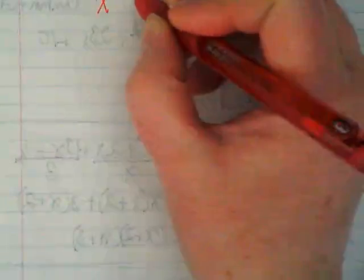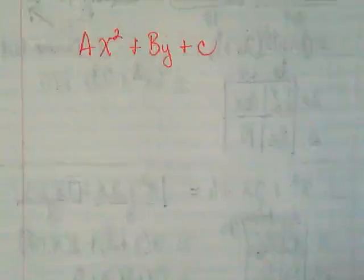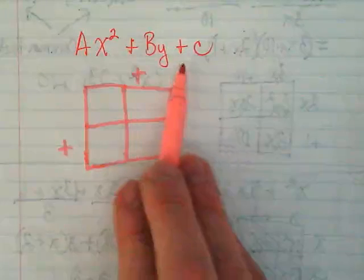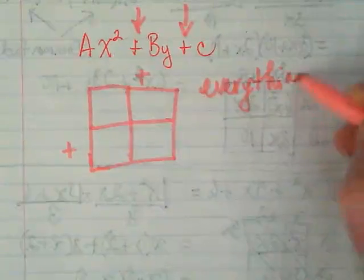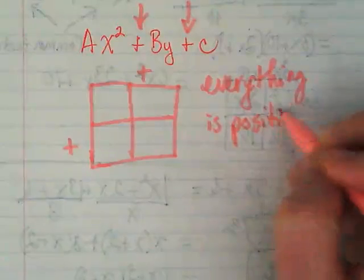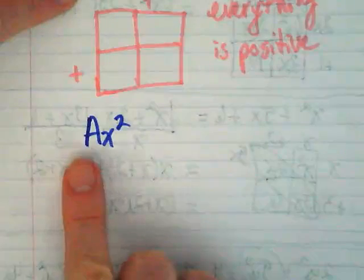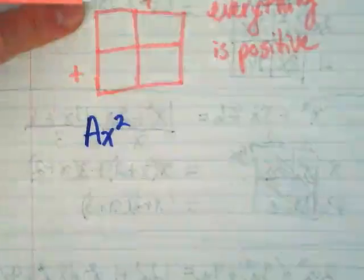Let's write ax squared plus bx plus c as a general form. When I make my box, if there's a plus here and a plus here — everything in the box is going to be positive, because the two numbers added together are positive and multiplied together are positive. So if there's a plus in the middle and a plus at the end, everything is positive. Sometimes this 'a' is an invisible one, which is what we've been dealing with. In a minute we'll do examples where there's a number there, which changes it slightly but not the sign rules.